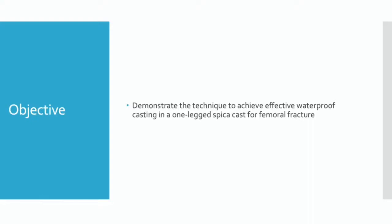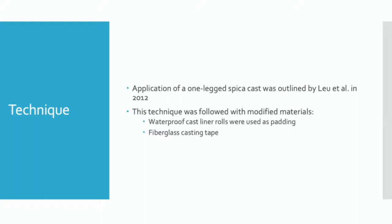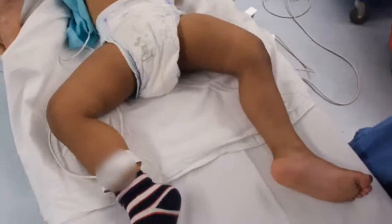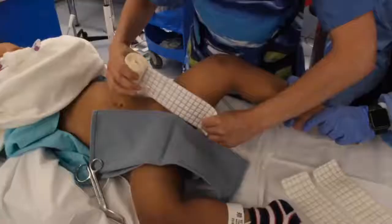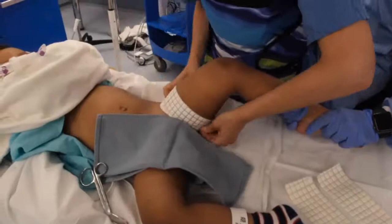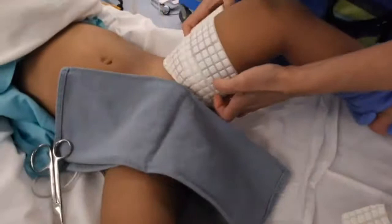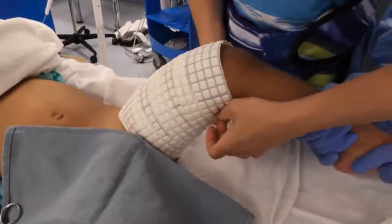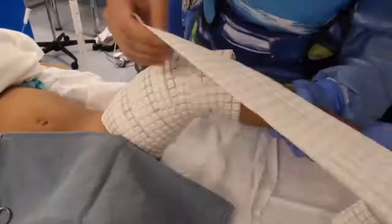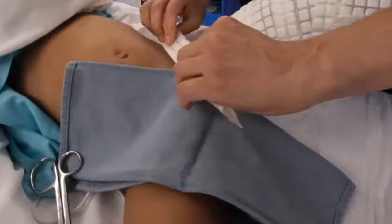The objective is to demonstrate the technique for effective waterproof casting in a one-legged spica cast for a femoral shaft fracture. Application follows the technique outlined by Lev et al. in 2012, with modified materials — waterproof cast liner rolls used as padding and fiberglass casting tape. The patient was placed supine on a radiolucent OR table under general anesthesia. Three-inch waterproof cast liners padded the leg, with an additional strip folded in the groin to protect this area of bony prominence.